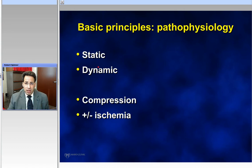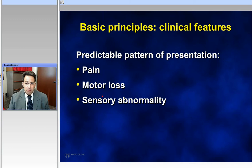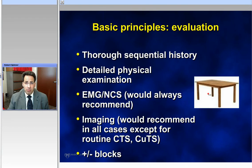The pathophysiology can either be understood in terms of static or dynamic compression, and I think that's important when you think about provocative maneuvers that we've all learned. There are some clinical features that should be known and are predictable. I'm simple-minded — I think that nerves do three things: pain fibers, muscle fibers, and sensory fibers, and they can all have associated dysfunction. You need to ask about these when taking a history and doing a physical exam. The key is that the pattern of presentation with these syndromes, by definition, is largely predictable.